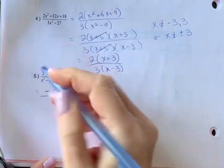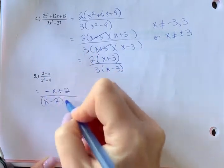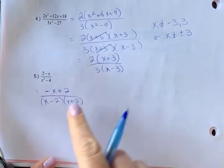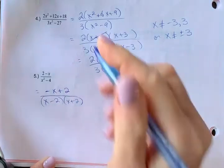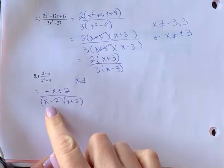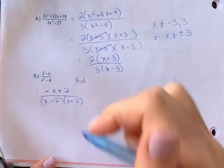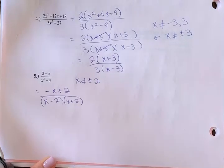I have difference of squares here, so I can factor x minus two, x plus two. This allows me to see my restrictions. X cannot equal two, and x cannot equal negative two. So we can say plus or minus two.